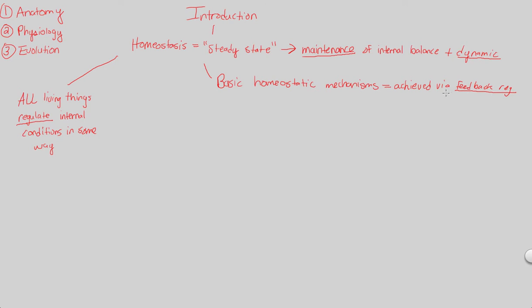What does feedback regulation mean? Basically, whenever we talk about feedback regulation, we have to understand two things. There's going to be a stimulus — usually from the external environment — that hits us. And from there, we have to designate an appropriate response to that stimulus. Usually that response is something internal that will balance out, counteract, or maybe even promote that external stimulus. Think of this as the external versus the internal. There are two ways that the response can react to or change that stimulus.